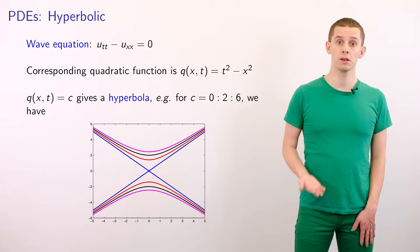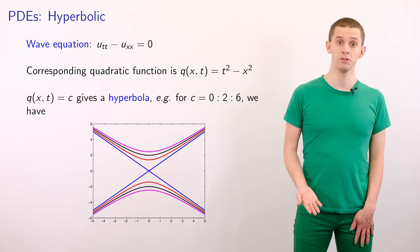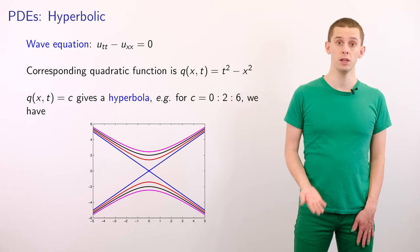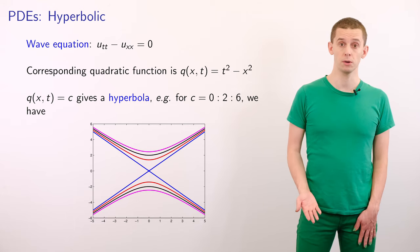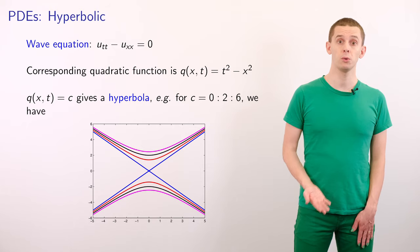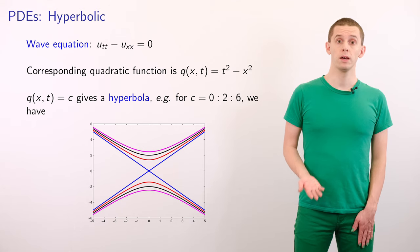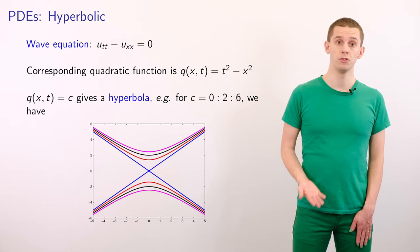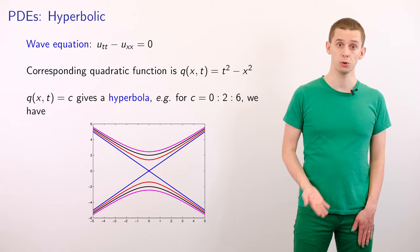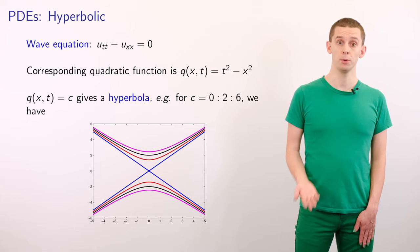So let's begin by looking at our prototypical hyperbolic PDE, the wave equation. So we have u_tt minus u_xx equals zero. And we can map that onto the quadratic function q of x and t is equal to t² minus x². And if we now look at the curves q of x and t is equal to a constant c, then we see that we end up with hyperbola.